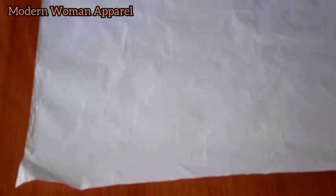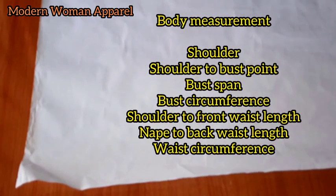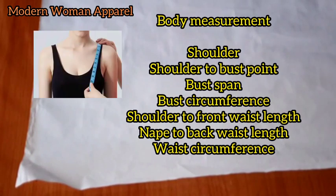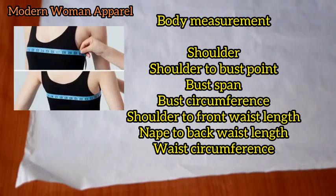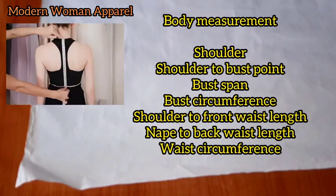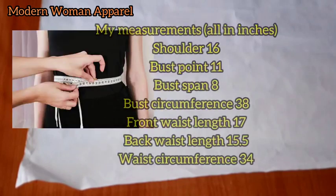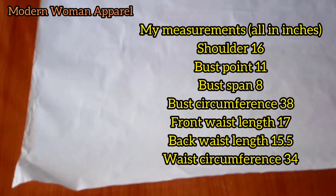In today's class I will be showing you how to draft and sew a half-scale basic bodice block — that is from your shoulder line to your waistline, or your half length. The measurements you'll be needing for this class are: the shoulder measurement, shoulder to bust point, bust span measurement, bust circumference, shoulder to front waistline, shoulder to back waistline, and the waist circumference.